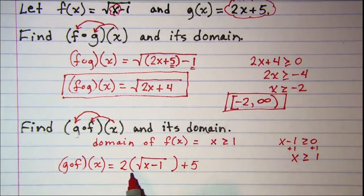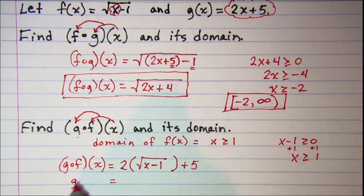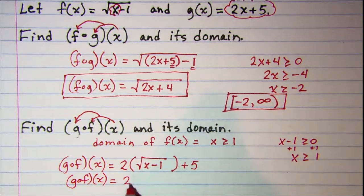This will not simplify any further unless we just remove the parentheses. So g composition f is 2 times the square root of x minus 1 plus 5.